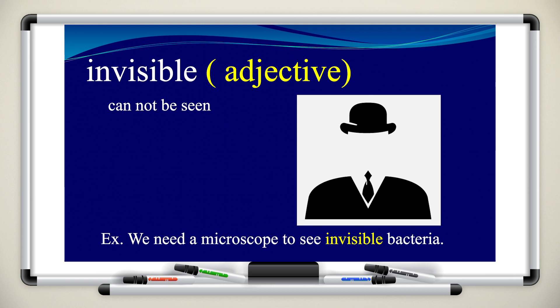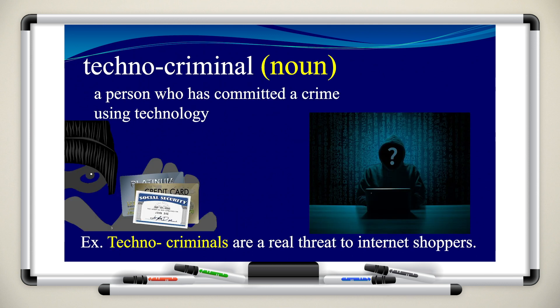Now, where is the man in the picture? He's invisible. 'Invisible' is an adjective that means cannot be seen. For example, we need a microscope to see invisible bacteria. A 'techno-criminal' is a noun meaning a person who has committed a crime using technology. That's why we call them techno-criminals. For example, techno-criminals are a real threat to internet shoppers.